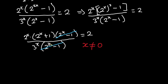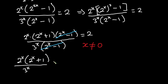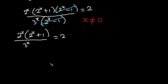This means we can cancel (2 to the power x minus 1), with one condition: x is never equal to 0. If x equals 0, the left-hand side becomes indeterminate. So with that condition, we have 2 to the power x times (2 to the power x plus 1) all divided by 3 to the power x, equal to 2. From here I'll cross-multiply, giving us 2 to the power x times (2 to the power x plus 1) equals 2 times 3 to the power x.